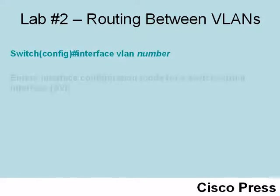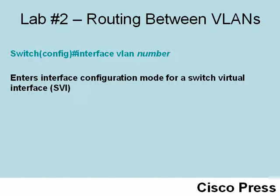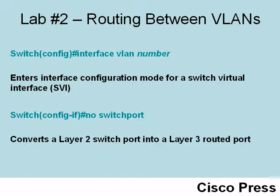Let's look at the multi-layer switch syntax we are going to use. To create an SVI, we say 'interface VLAN' followed by the number of a VLAN we have already created — in our case, 'interface VLAN 10'. This takes us into interface configuration mode for the switch virtual interface, where we can assign an IP address. To convert a layer 2 switch port into a layer 3 routed port, we go into interface configuration mode for that port and issue the command 'no switchport', which converts it into a layer 3 routed port.